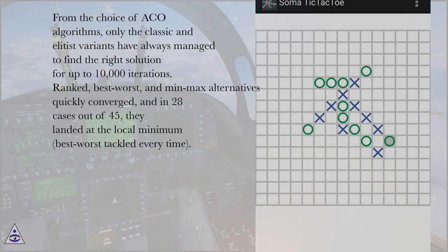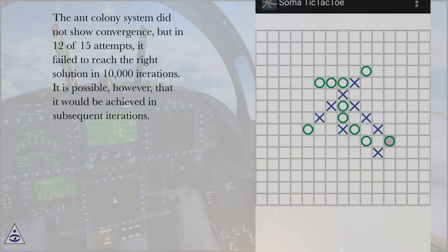From the choice of ACO algorithms, only the classic and elitist variants have always managed to find the right solution for up to 10,000 iterations. Ranked, best-worst, and min-max alternatives quickly converged, and in 28 cases out of 45, they landed at the local minimum. Best-worst failed every time. The ant colony system did not show convergence, but in 12 of 15 attempts, it failed to reach the right solution in 10,000 iterations.